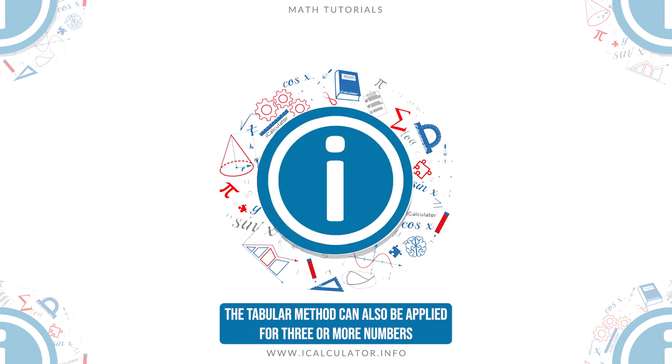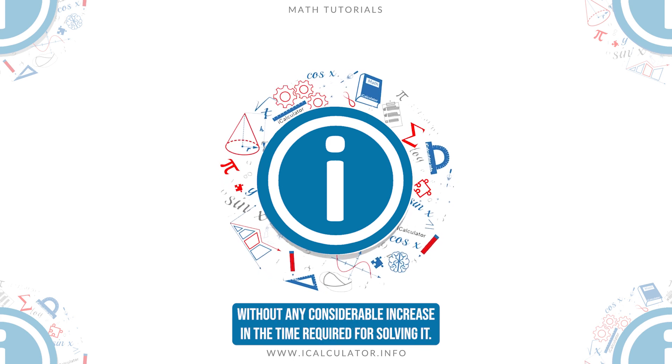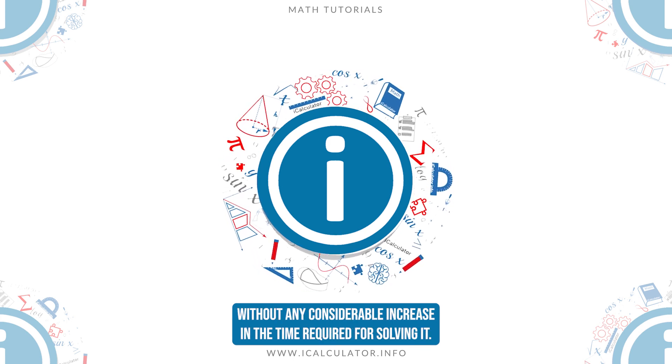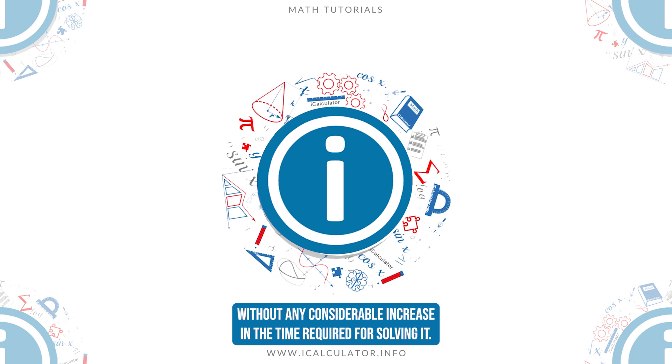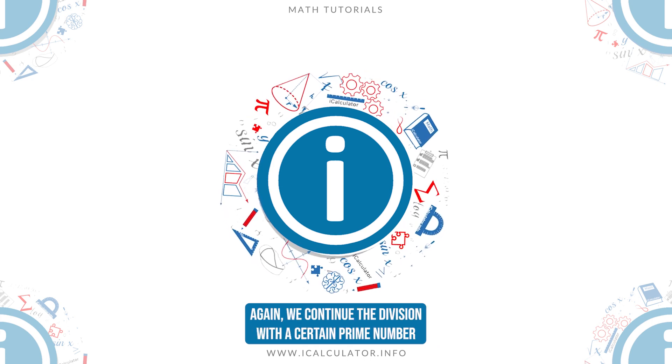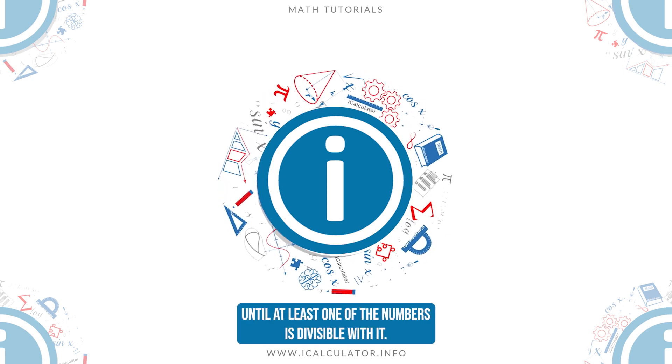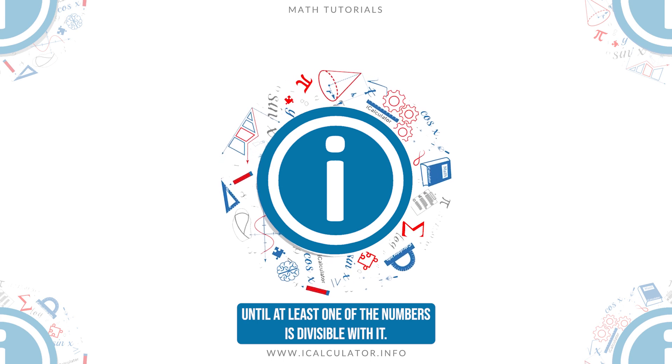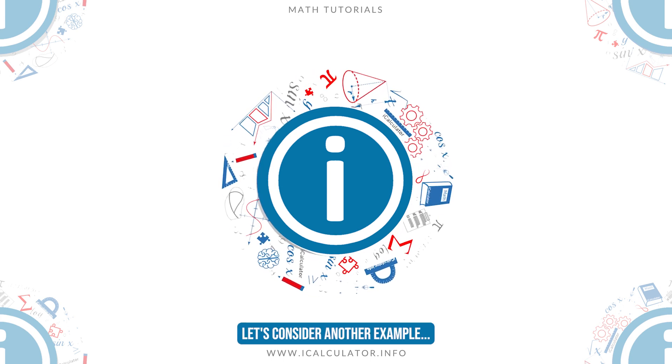The tabular method can also be applied for three or more numbers without any considerable increase in the time required for solving it. Again, we continue the division with a certain prime number until at least one of the numbers is divisible with it. Let's consider another example.